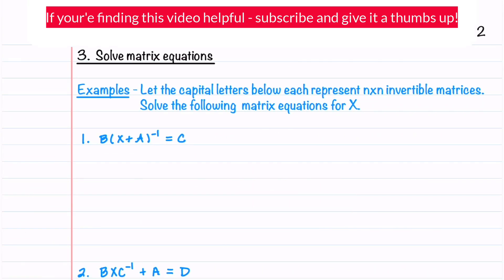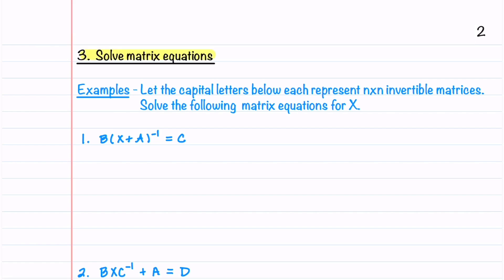Now that we know how to simplify matrix expressions, we can use what we just learned to solve matrix equations. In the examples below, we're going to let the capital letters represent n by n invertible matrices. We're then asked to solve the following matrix equations for X. Our goal is going to be to isolate X on the left-hand side. The first step is to get rid of matrix B — to do that, we can multiply both sides of the equation by B inverse. We have B inverse times B times X plus A inverse is equal to B inverse times C.